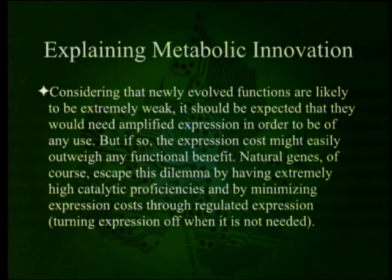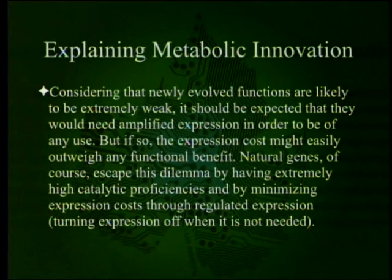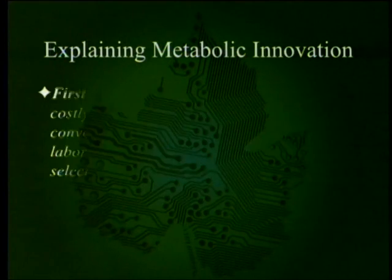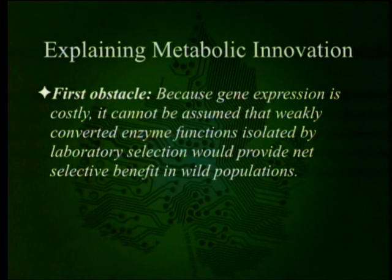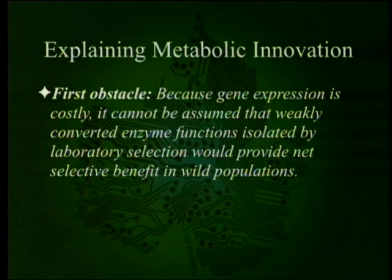Considering that newly evolved functions are likely to be extremely weak, they would need amplified expression to be of any use. But if so, the expression cost might easily outweigh any functional benefit, and therefore these would be deselected rather than selected. Natural genes escape this dilemma by having extremely high catalytic proficiencies and by minimizing expression costs through regulated expression — that is, turning expression off when it is not needed. First obstacle: because gene expression is costly, it cannot be assumed that weakly converted enzyme functions isolated by laboratory selection would provide net selective benefit in wild populations.